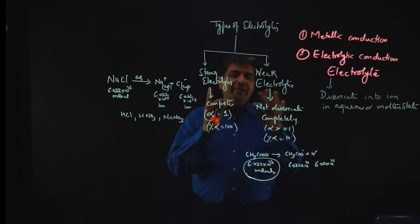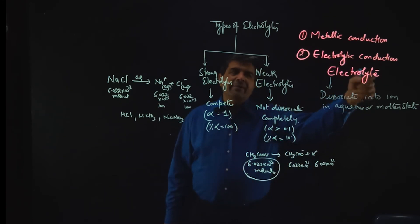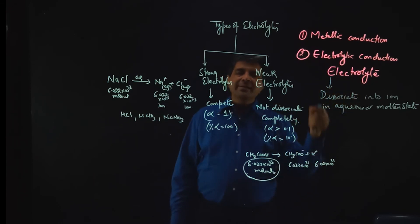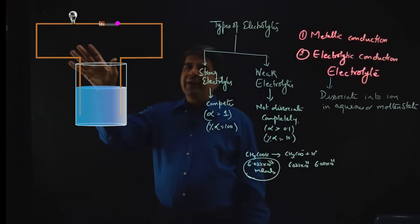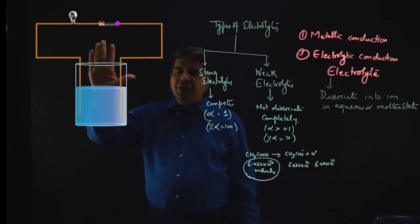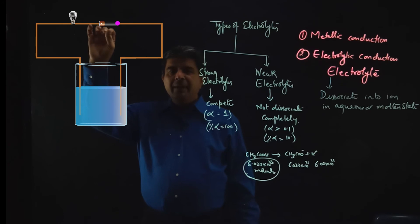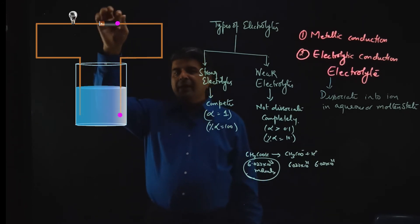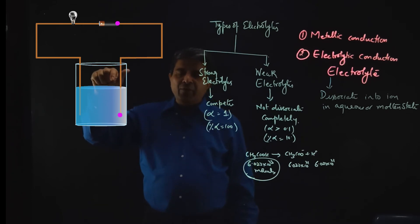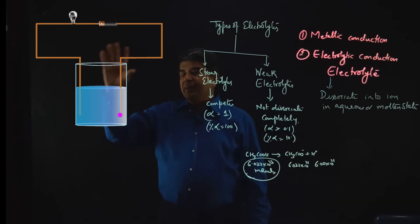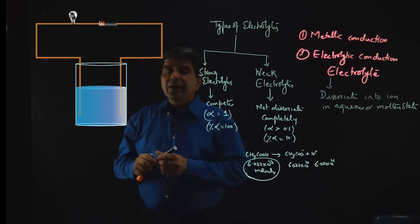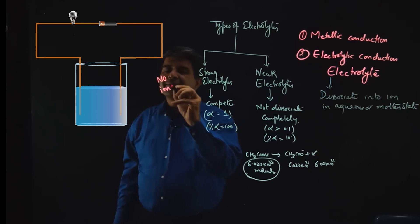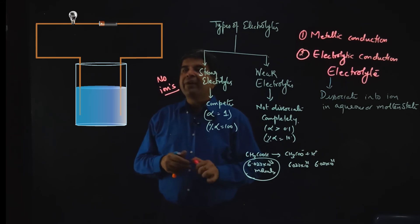A solution containing either strong or weak electrolytes that conducts electricity is termed electrolytic conduction. In the figure, I have taken distilled water with two electrodes dipped in it connected to a battery through a bulb. When the battery is turned on, electrons come only up to the negative electrode and do not flow further — because distilled water does not conduct electricity. There are no ions present in distilled water, so it will not conduct electricity.